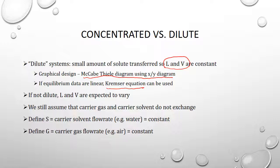If the system is not dilute, we call it concentrated. What we mean by that is that the liquid and vapor flow rates are expected to vary because of the amount of solute that gets transferred from one phase to another. An obvious case would be if there's 10% solute in the feed in the liquid phase — if we're supposed to remove 90% of that or more, we're going to reduce the liquid flow rate to 90% of what it was, which will have a significant impact on the slope of the operating line.